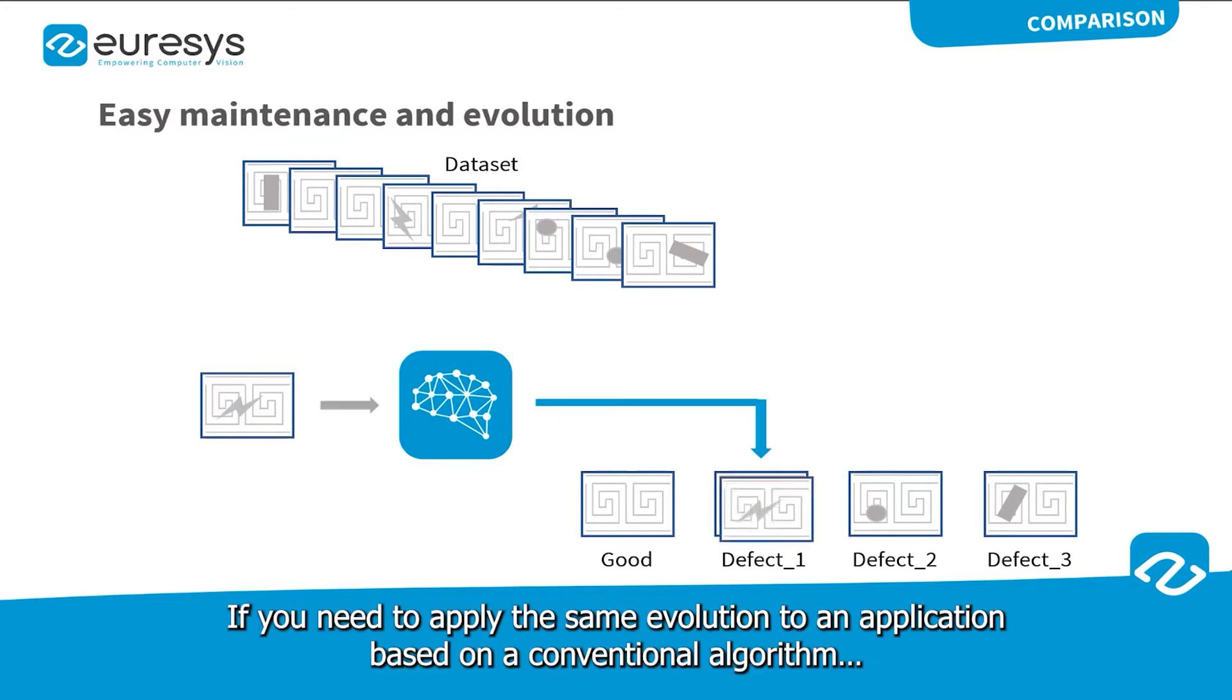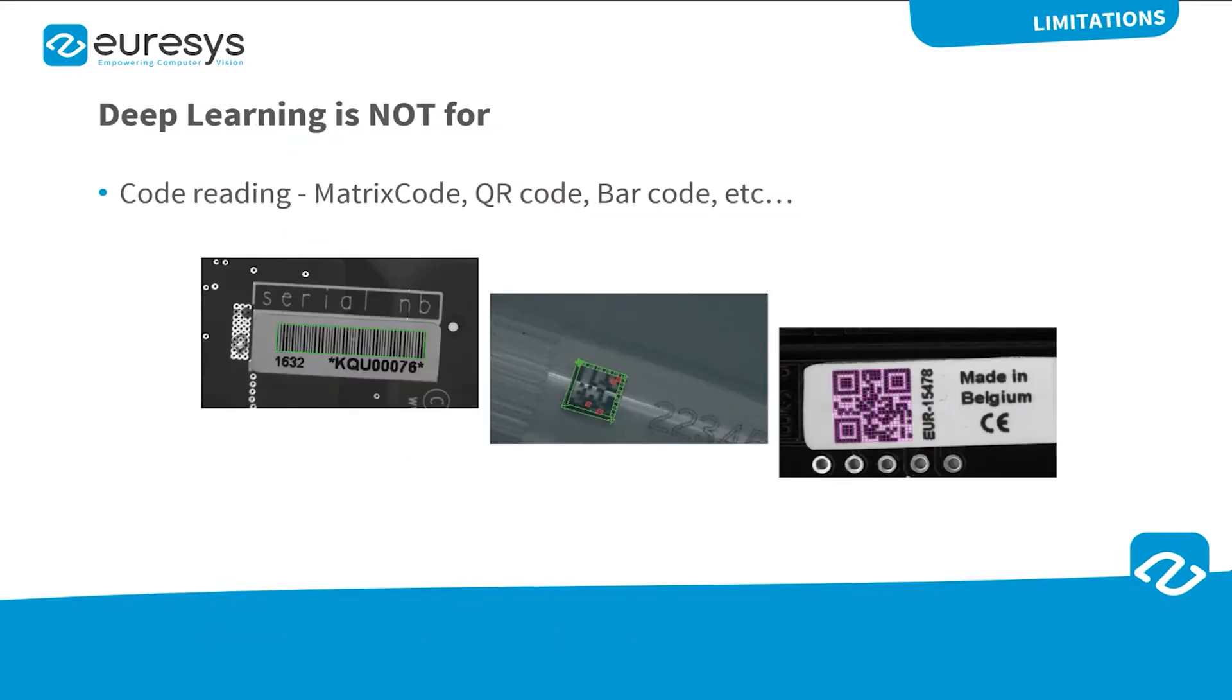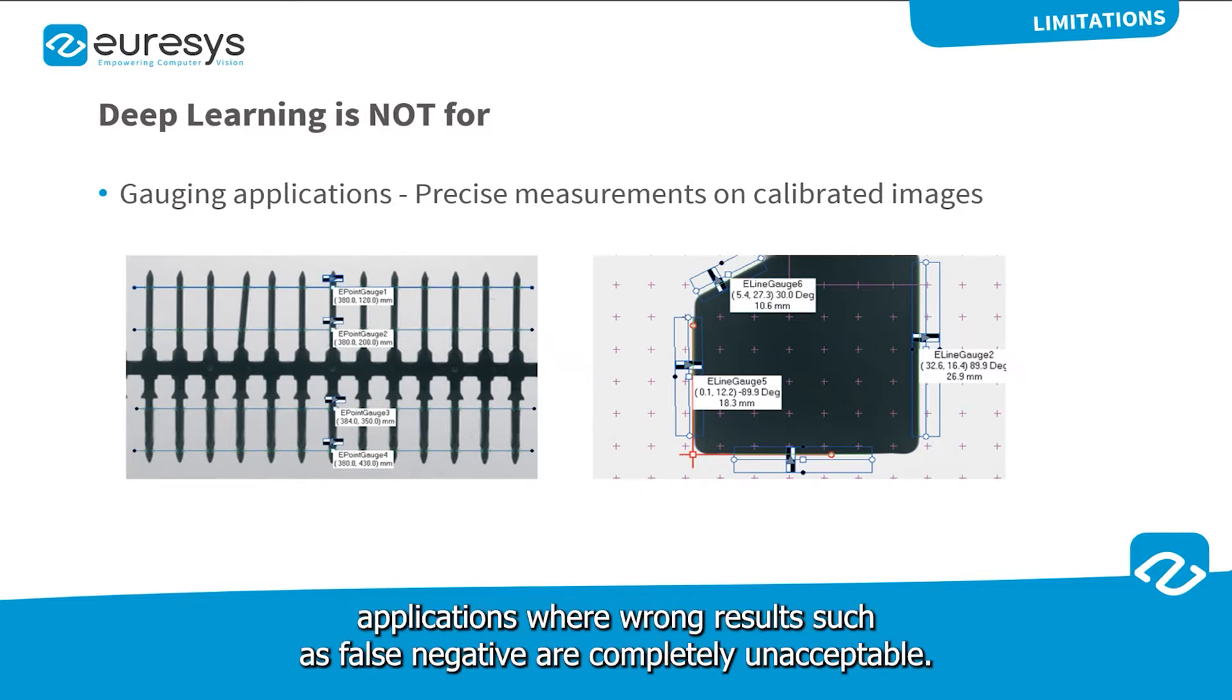If you need to apply the same evolution to an application based on conventional algorithms, you need to apply the same evolution to a new type of defect in your code. There are, however, some applications for which a convolutional neural network approach is not adequate. Reading codes such as barcode, data matrix code, or QR code is something that cannot be achieved with deep learning. Accurate measurement is another example of applications where deep learning does not help. It is also not recommended to use deep learning based tools for applications where wrong results such as false negatives are completely unacceptable.